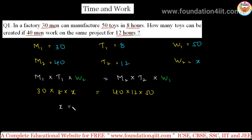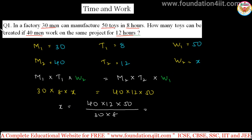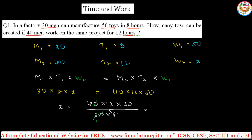From this, x = (40 × 12 × 50) / (30 × 8). You can simplify and get the answer. After cancellation, 40 men working 12 hours can manufacture 100 toys. Only the work done should be reversed in the formula.